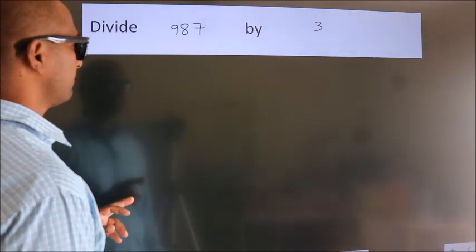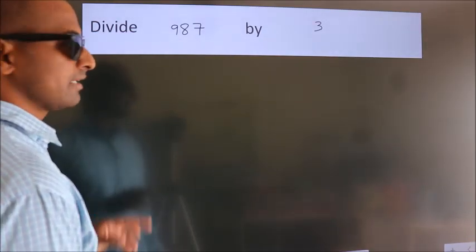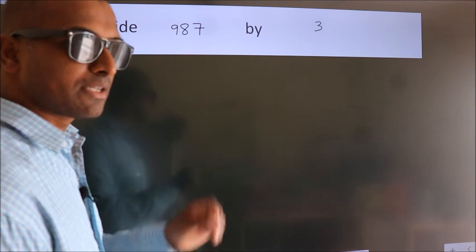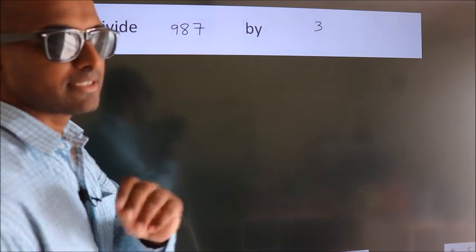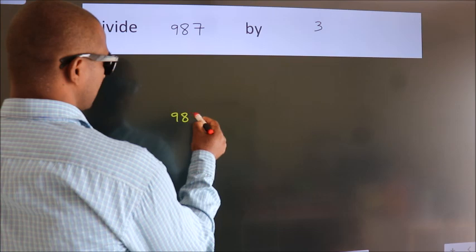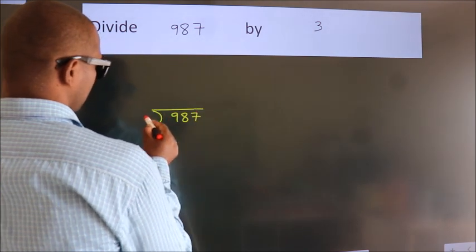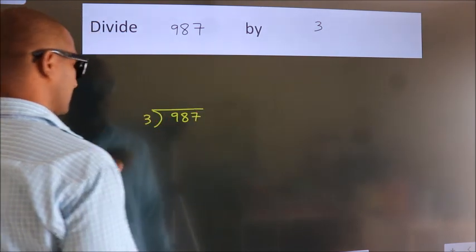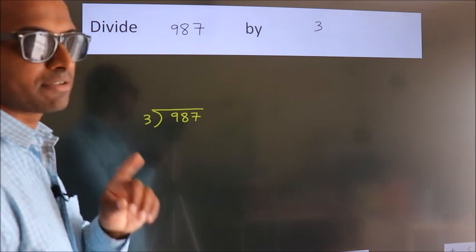Divide 987 by 3. To do this division, we should frame it in this way. 987 here, 3 here. This is your step 1.